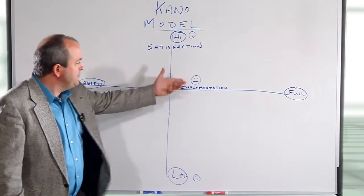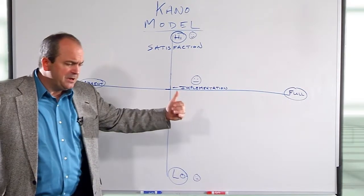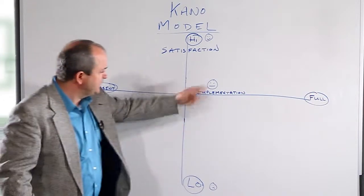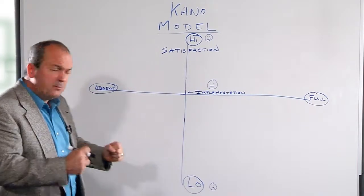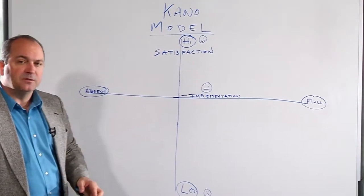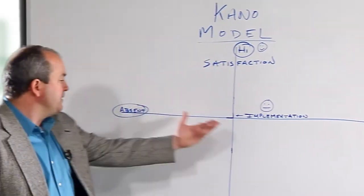In the middle we're just basically meeting the customer's needs. We're not exceeding them, we're meeting them. That's why you see kind of a face between a smile and a grimace. On the horizontal axis we have implementation. On the right side that's fully implemented criteria or customer need, and on the left side the implementation is completely absent, non-existent.